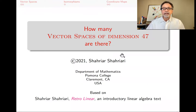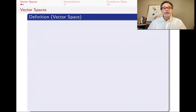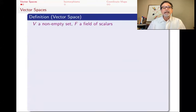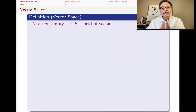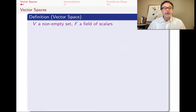Let me get started by quickly reviewing where we started in this whole linear algebra journey. We started by defining vector spaces. We have a non-empty set and a field of scalars. For first-time viewers, the field of scalars is the real numbers — just think of F as the real numbers. But the scalars could be other things — any place where you can add, multiply, subtract, and divide by non-zero elements.